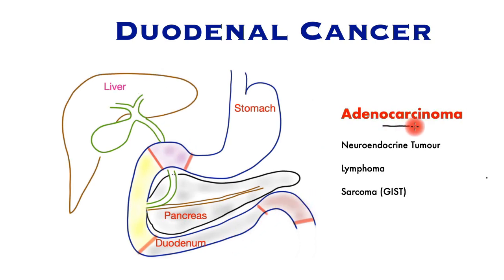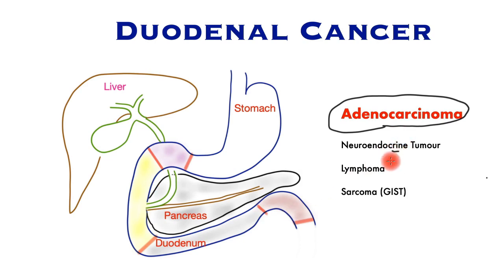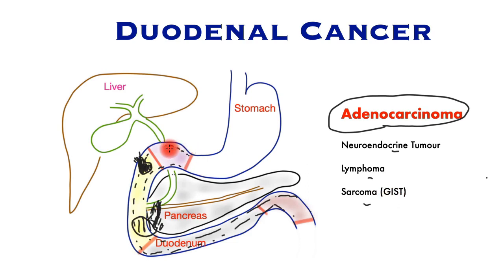The focus of this video is the adenocarcinoma, which is a primary duodenal cancer. Other tumours may also arise in the duodenum but are not discussed here, such as the neuroendocrine tumour, the lymphoma, and the sarcoma, also called the GIST type tumour. These tumours arise from the lining of the duodenum called the epithelial layer, and typically they form nubbins on the surface of the duodenum called polyps. These polyps may increase in size and cause obstruction of the duodenum, stopping the food from going through, or equally may cause obstruction of the pancreatic duct or the bile duct, causing jaundice.